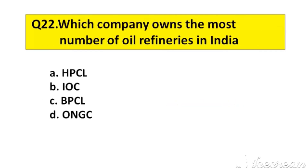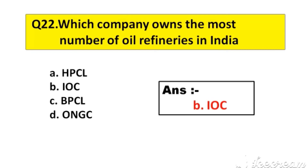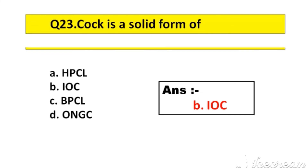Question number 22. Which company owns the most number of oil refineries in India? Option A: HBCL, B: IOC, C: BPCL, D: ONGC. The right answer is option B: IOC.